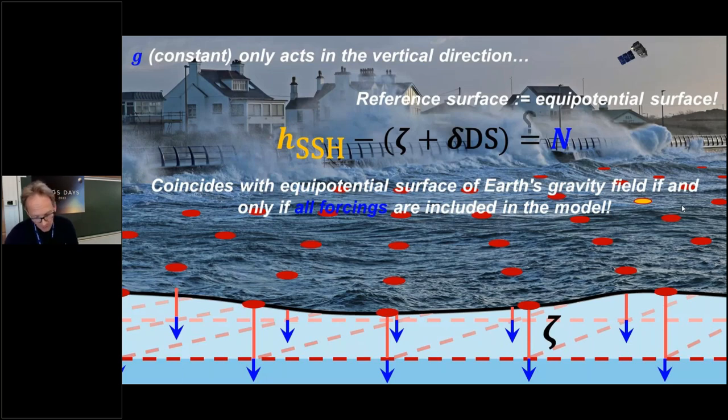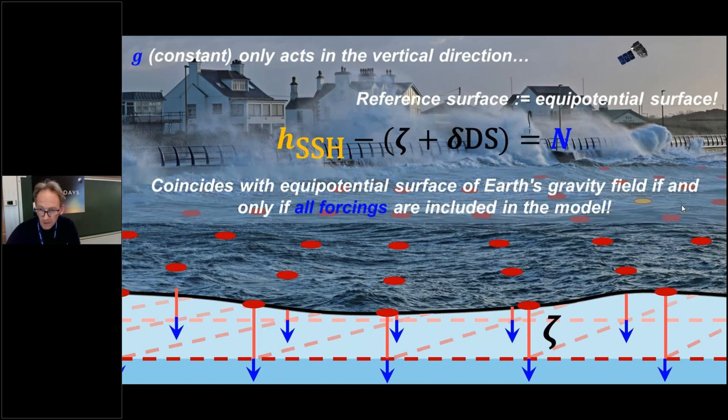In our application or the models that we worked on at that time, this was not the case because one of the key components, our baroclinic forcing, was ignored. This is not so relevant for storm surge modeling, but they have a very important contribution to the mean dynamic topography. So we had to do some work to realize this reference surface in an unambiguous way.